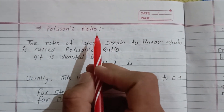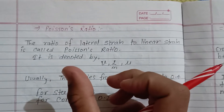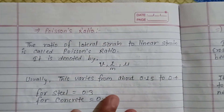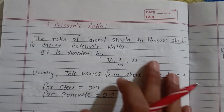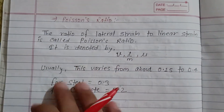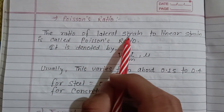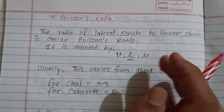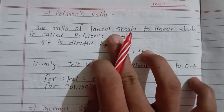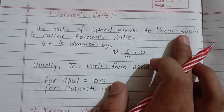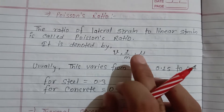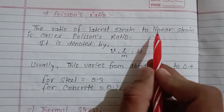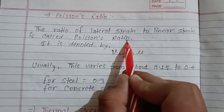The theory of Poisson's ratio: it is the ratio of lateral strain to linear strain, also called the ratio of lateral extent to linear extent. Lateral extent upon linear extent is Poisson's ratio. The ratio of lateral extent to linear extent is called Poisson's ratio.